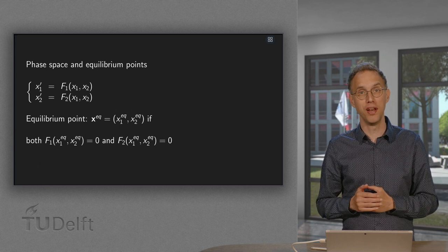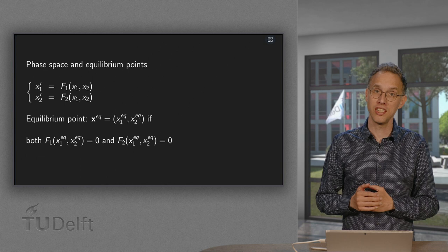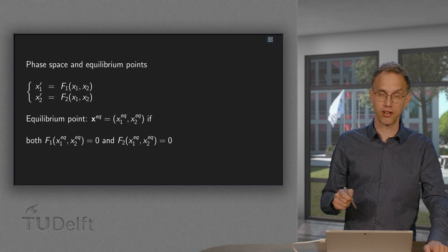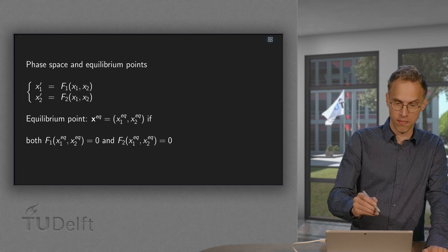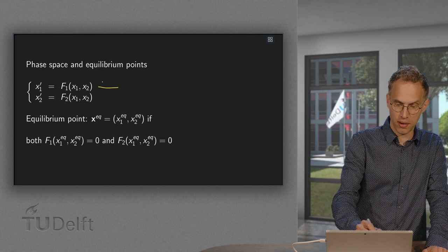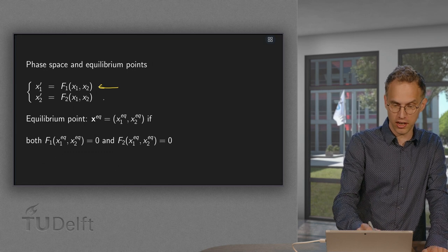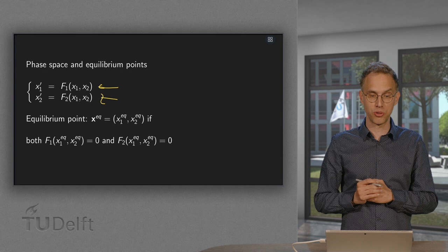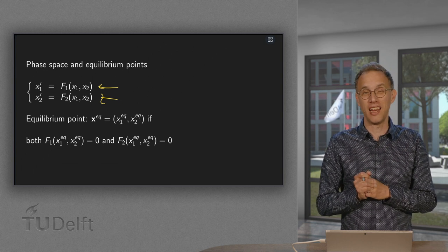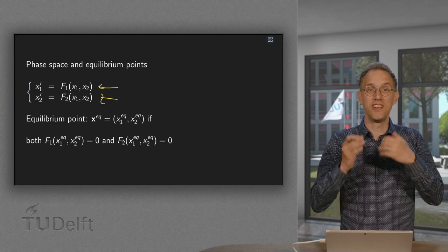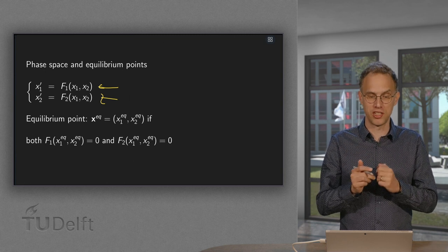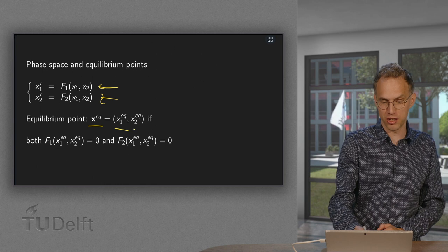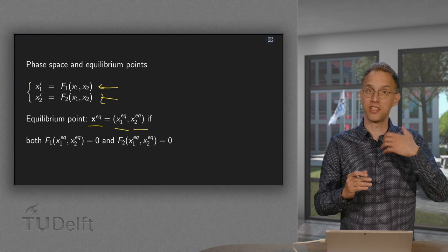Furthermore, we will look at equilibrium points, because these are an essential ingredient of our phase space. So let us look at the equilibrium points first. We have x1' equals some function of x1 and x2, and x2' equals some function of x1 and x2 as well. We are in an equilibrium point if we stay there forever. We have an equilibrium point with x1 and x2 coordinates if its derivatives are zero.